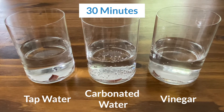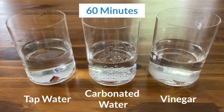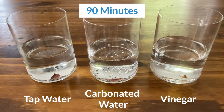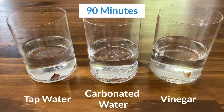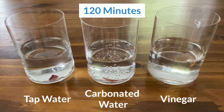Scientists use a measurement called pH to determine how acidic or basic solutions are. Pure water has a neutral pH of 7. The lower the pH, the more acidic. Carbonated water, which is made bubbly by carbon dioxide gas, has a pH of about 3 to 4, and vinegar has a pH of 2. As you can see, the shell dissolved most quickly in the vinegar, followed by the carbonated water. The shell seems unchanged in tap water.